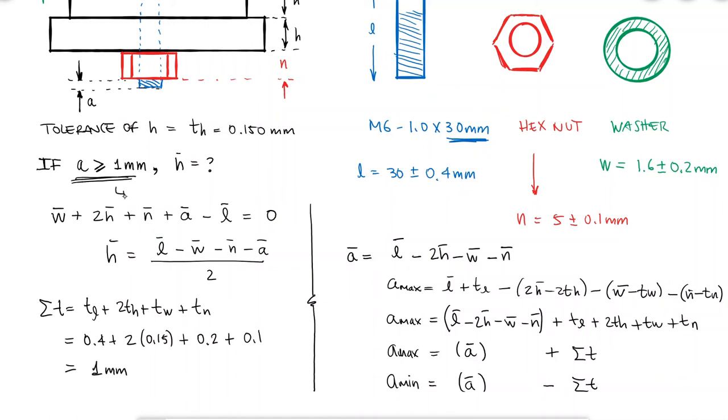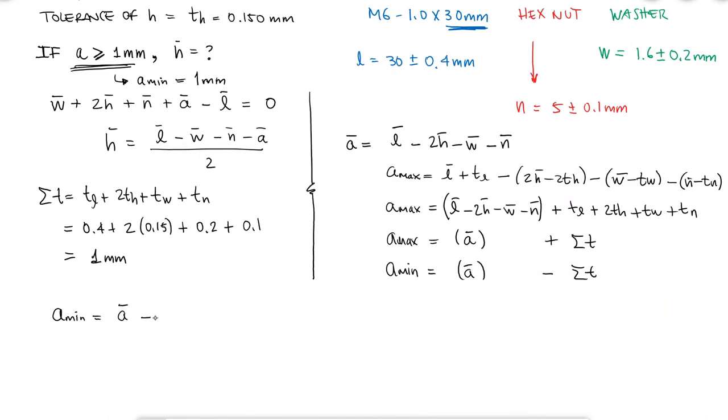and even without looking at the right hand side of the screen, I know that the minimum A is equal to its average minus its tolerance. I know that the average value of A should be the minimum value plus its tolerance, and that value was what I was missing to calculate the average value of H.